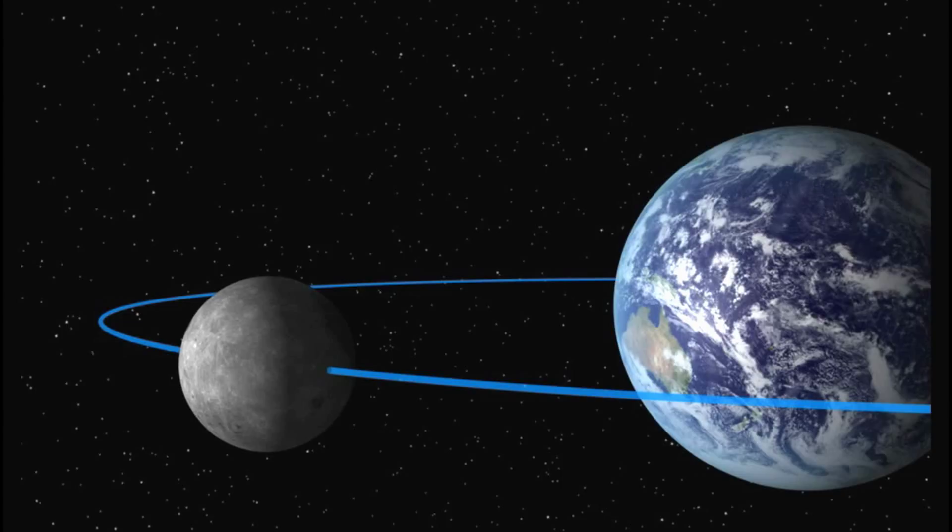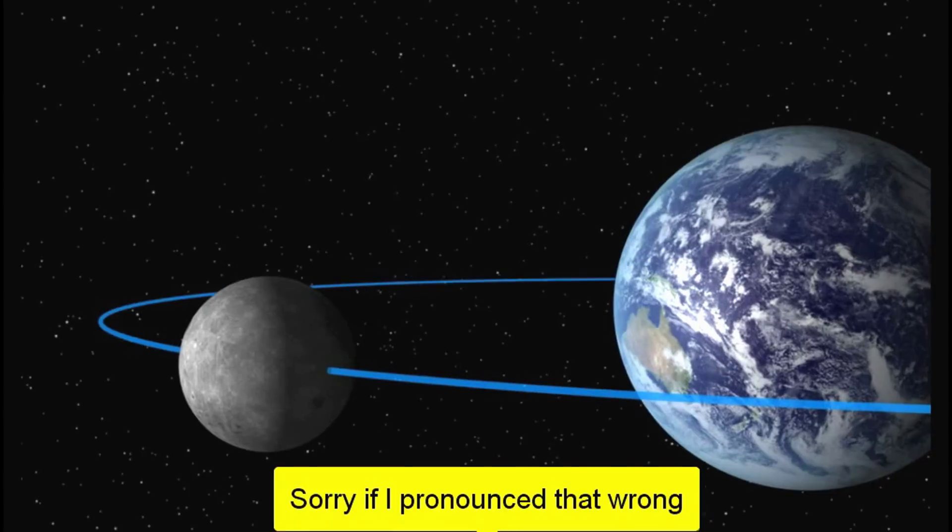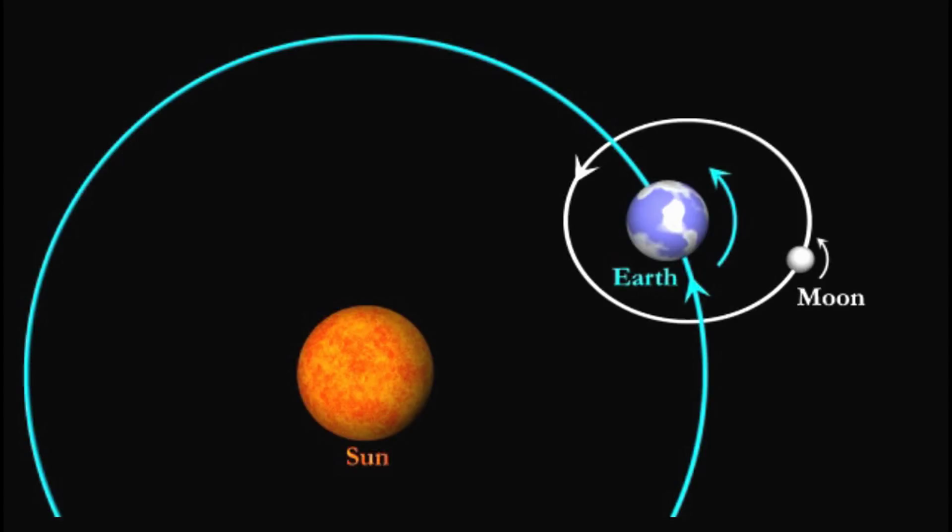The moon revolves around the earth, right? Wrong. Earth and the moon revolve around each other. More specifically, they revolve around a specific point called the barycenter, where the moon and the earth balance each other out. This point is inside Earth but it's closer to the surface than the core. So Earth and the moon revolve around this point.